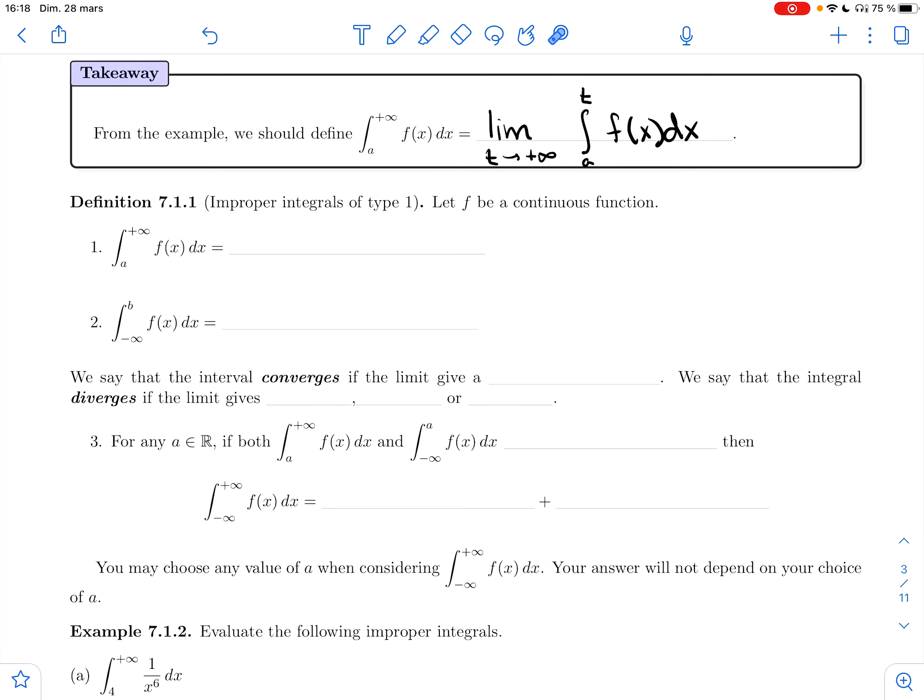Welcome back. In the last example, we saw that an integral from a to infinity should be thought of as a limit of real definite integral from a to t as t goes to infinity.